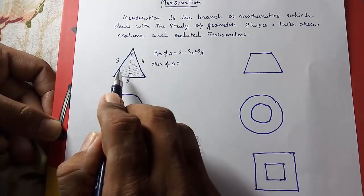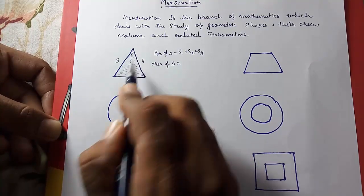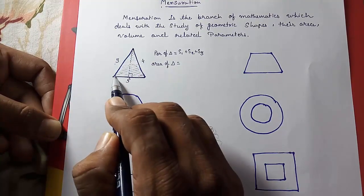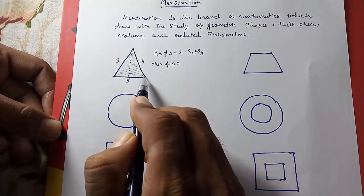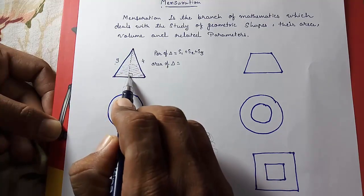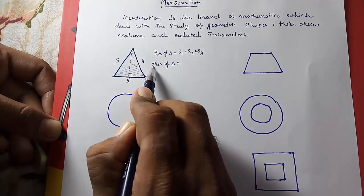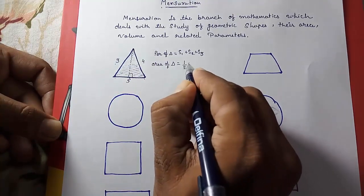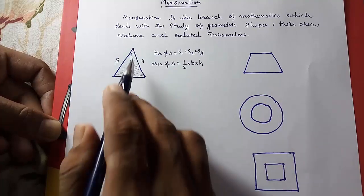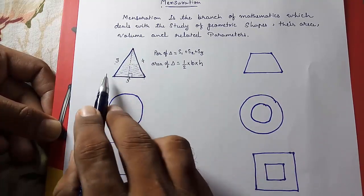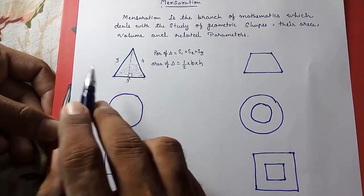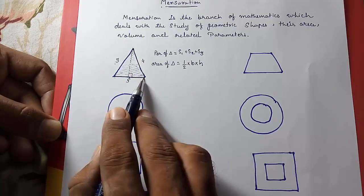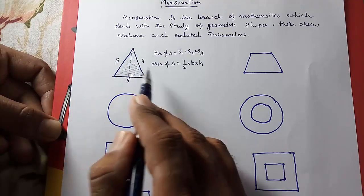In a triangle there are three heights. You can take height from any vertex to the opposite side, and that opposite side becomes the base. If you take height this way, this side becomes the base; if you take height another way, that side becomes the base. So the area of a triangle equals half multiplied by base multiplied by height. There are three heights and three bases — you can take any height and its corresponding base to find the area.